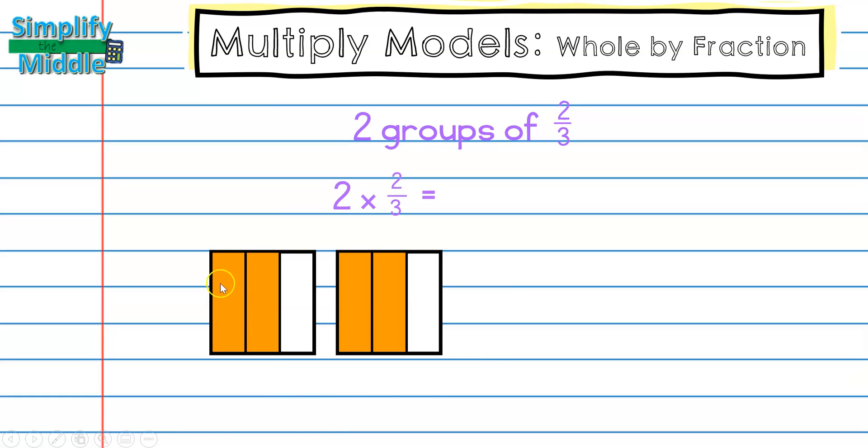I can see here that I have 1, 2, 3, 4—four thirds, that's my answer. But I know that it can be simplified. Sometimes putting them into another container makes it a little bit easier to see the answer.